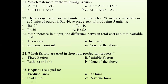Question 21: which statement is true? Average cost equals average fixed cost plus average variable cost — because total cost equals total fixed cost plus total variable cost, and the same applies to averages. So the answer is option 4: average cost equals AFC plus AVC.